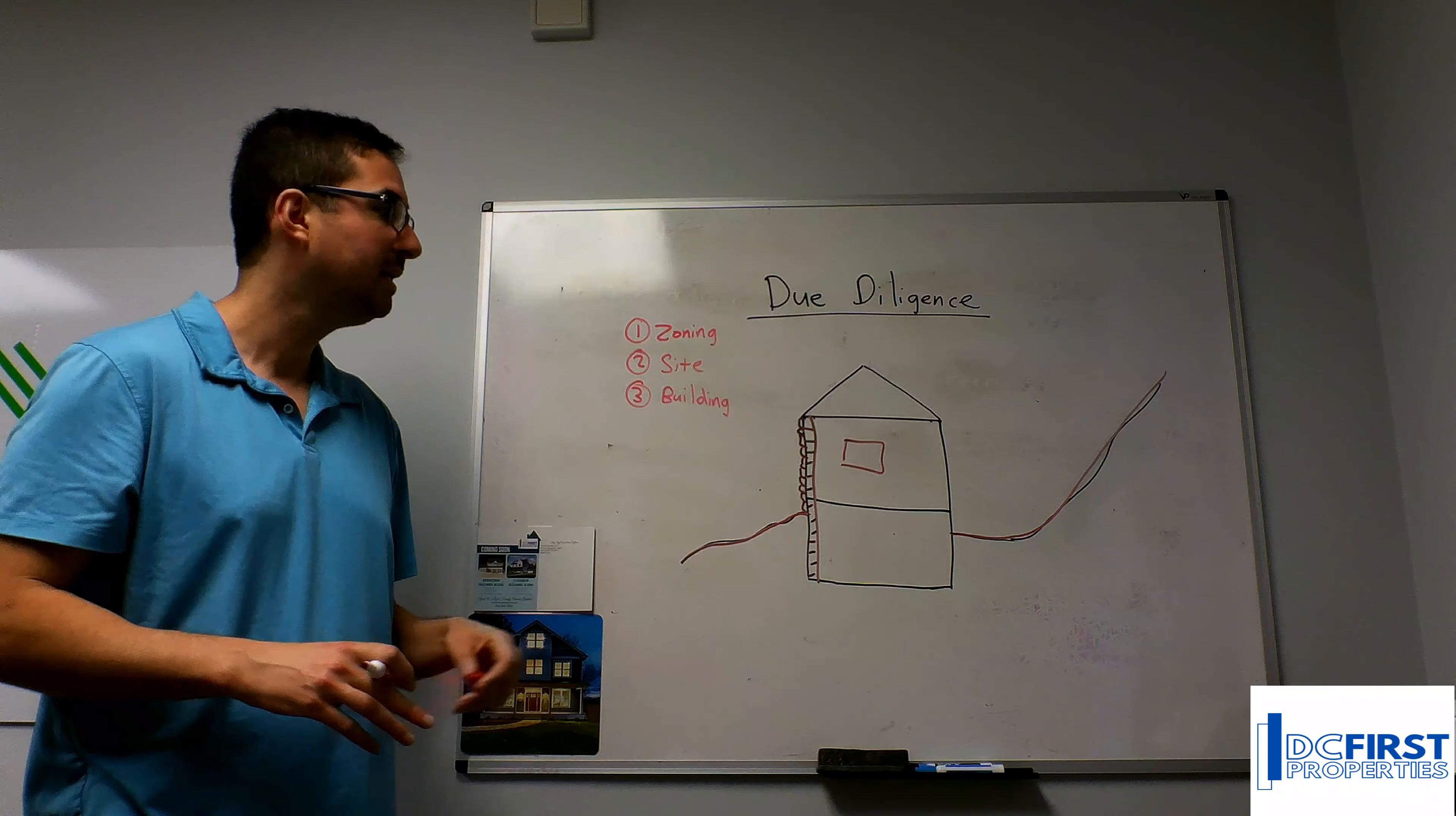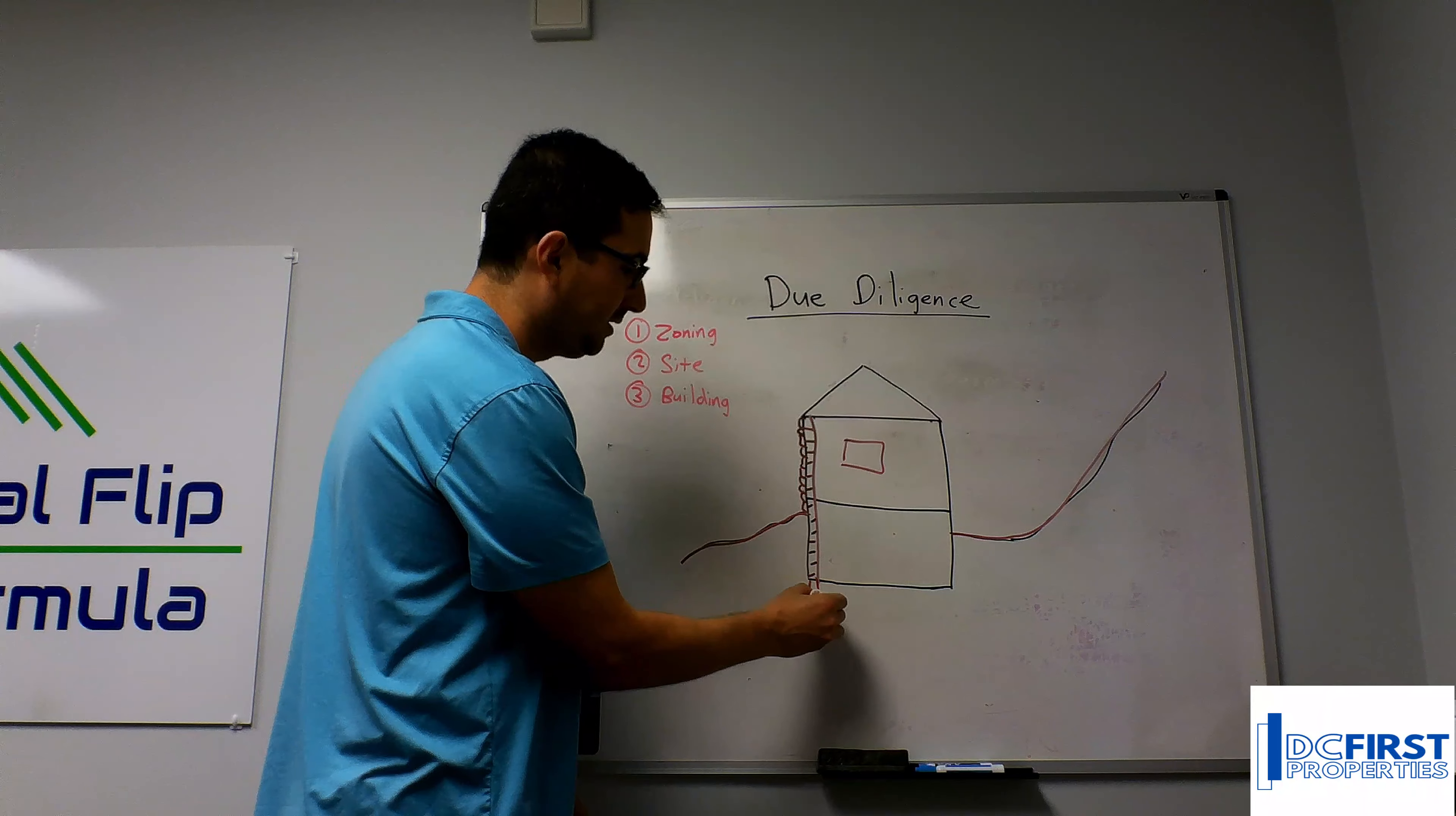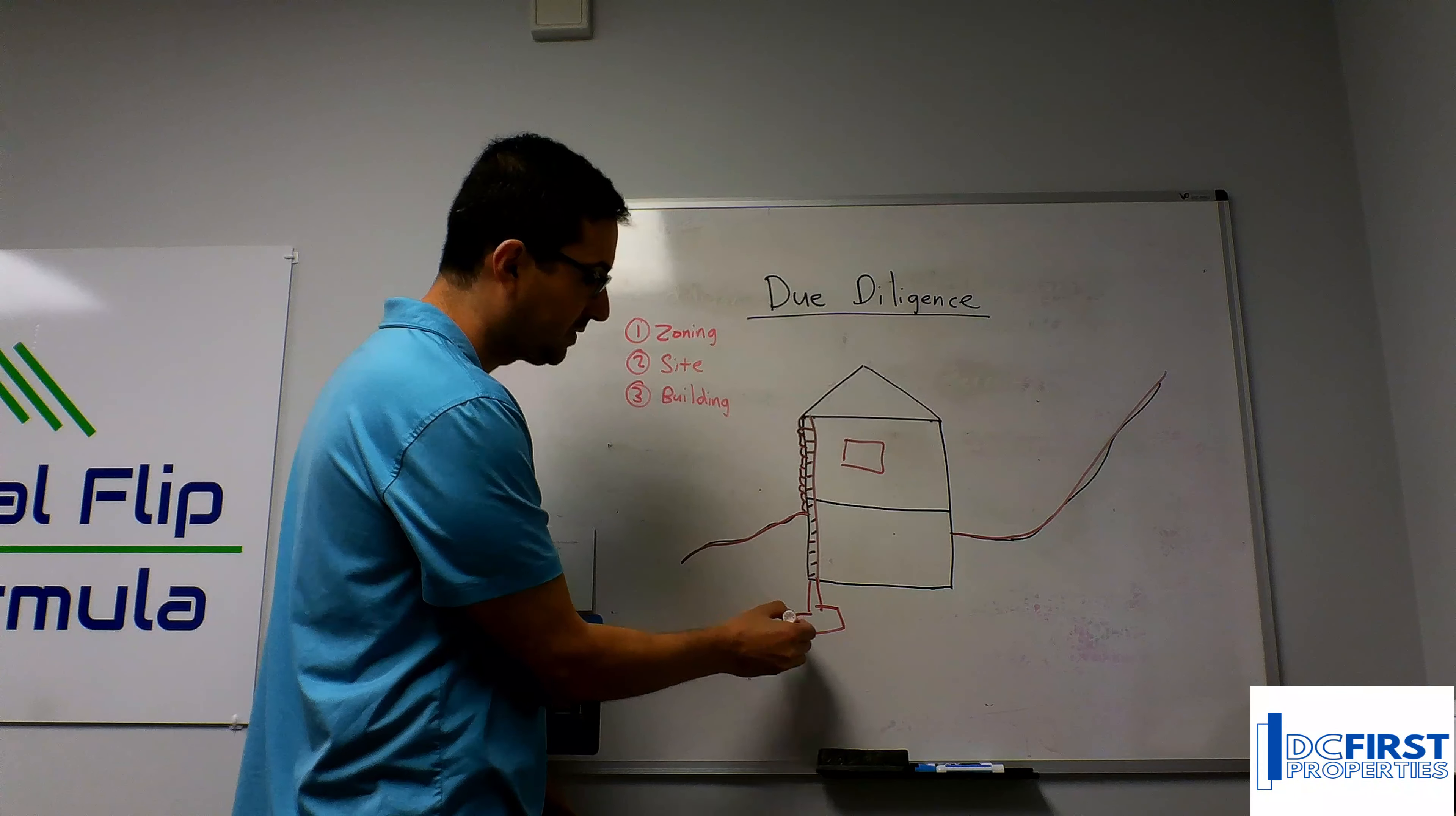First thing we're doing is marking all the existing door and window openings. Second thing is we're checking what the foundation looks like. In order to check what the foundation looks like, to see what it can support for future use, you have to dig down and measure what's called the footer height, depth, and width.